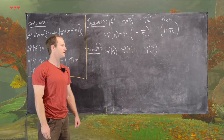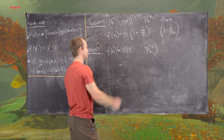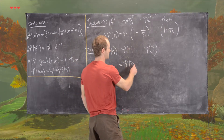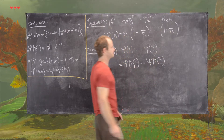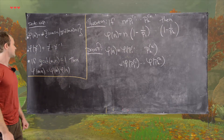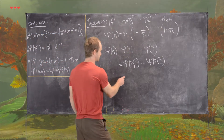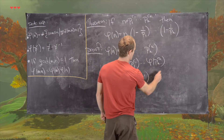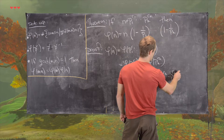Now since all of the pi's are distinct primes, they are relatively prime to each other. So we can use the multiplicative property of the phi function. That gives us phi of p1 to the r1 all the way up to phi of pk to the rk. Next, we apply the formula for phi on a power of a prime, giving us p1 to the r1 minus p1 to the r1 minus 1, all the way up to pk to the rk minus pk to the rk minus 1.